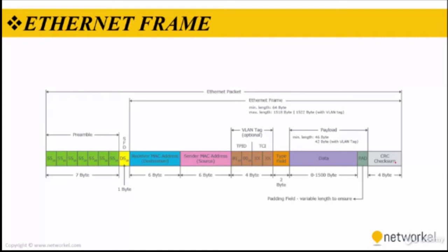Let's take a look at the Ethernet frame right now. An Ethernet frame consists of several fields, as you can see in the picture. There are: preamble, SFD, receiver MAC, sender MAC, an optional VLAN tag, a type field, payload, and CRC checksum.